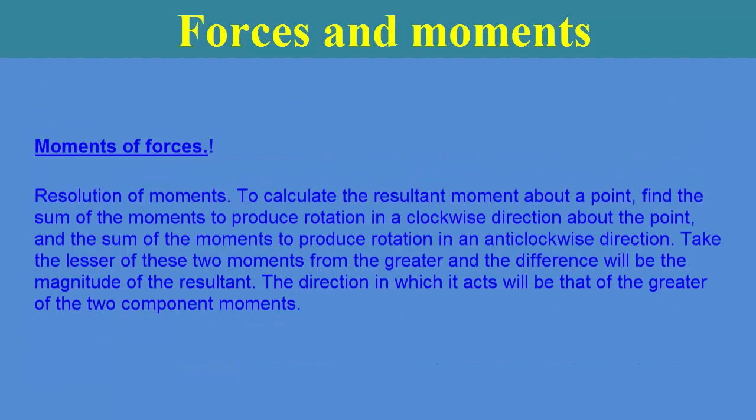Resolution of moments: to calculate the resultant moment about a point, find the sum of the moments producing rotation in a clockwise direction about the point, and the sum of the moments producing rotation in an anti-clockwise direction. Take the lesser of these two moments from the greater; the difference will be the magnitude of the resultant, and the direction will be that of the greater of the two components.